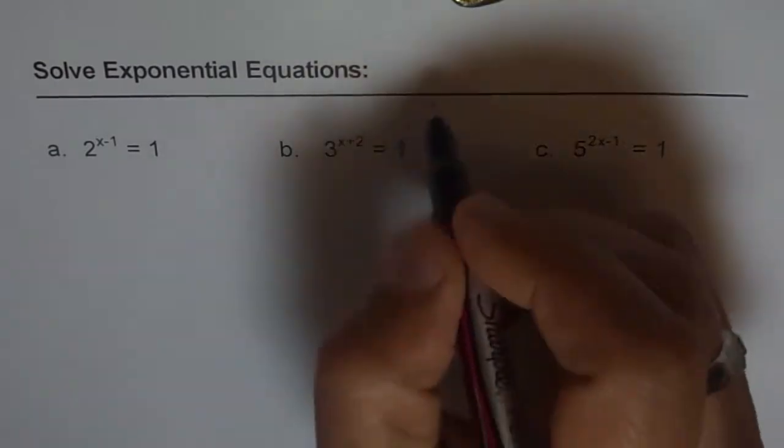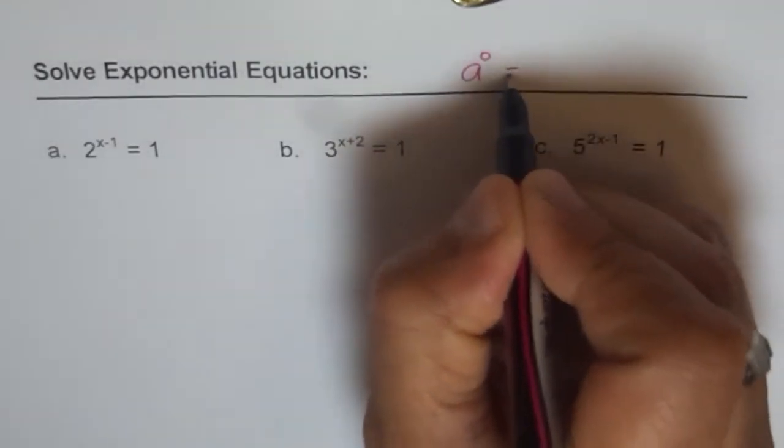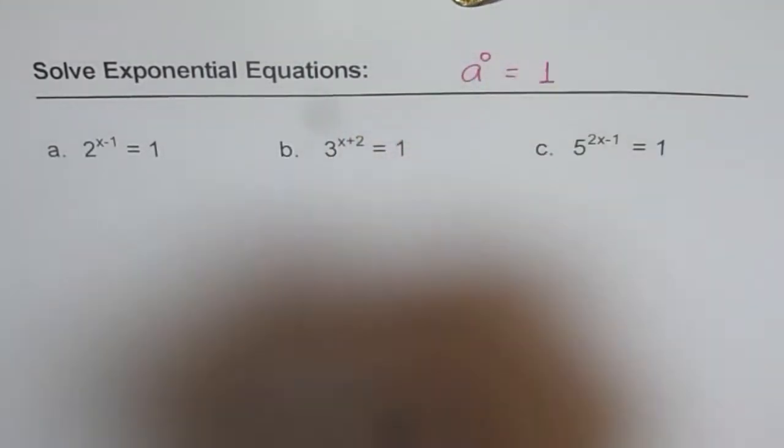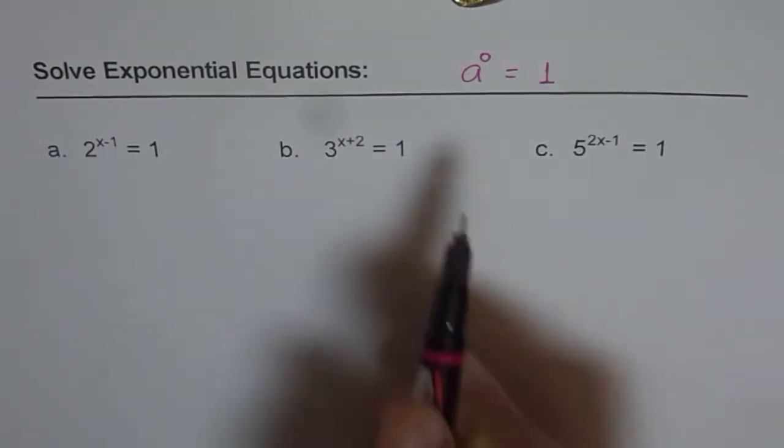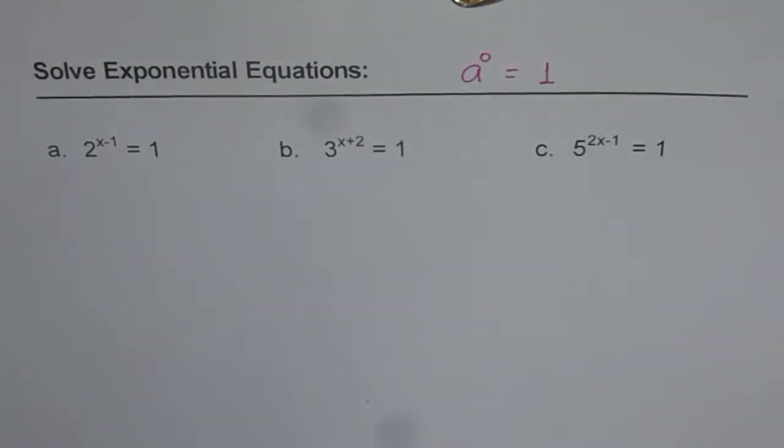As you know, a to the power of 0 is how much? Anything to the power of 0 is 1. And that is key to the solution of these three equations. With this, you can pause your video, write down your solutions and then check with mine.